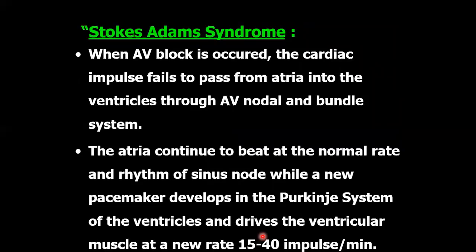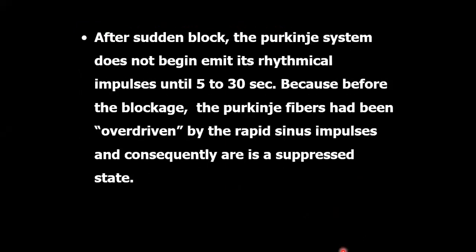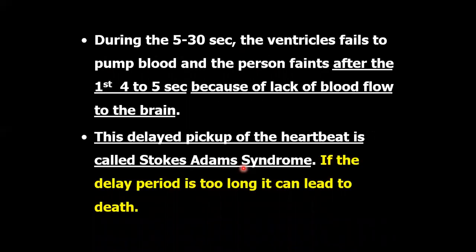Stokes-Adams syndrome: when AV block occurs, the cardiac impulse fails to pass from the atria into the ventricles through the AV nodal and bundle system. The atria continue to beat at the normal rate and rhythm of the sinus node, while a new pacemaker develops in the Purkinje system of the ventricles and drives the ventricular muscle at a new rate of 15 to 40 impulses per minute. After the sudden block, the Purkinje system does not begin to emit its rhythmical impulses until 5 to 30 seconds, because before the block the Purkinje fibers had been overdriven by the rapid sinus impulses and were consequently in a suppressed state. During these 5 to 30 seconds, the ventricles fail to pump blood and the person faints after the first 4 to 5 seconds due to lack of blood flow to the brain. This delayed pickup of the heartbeat is called Stokes-Adams syndrome, and if the delay period is too long it can lead to death.